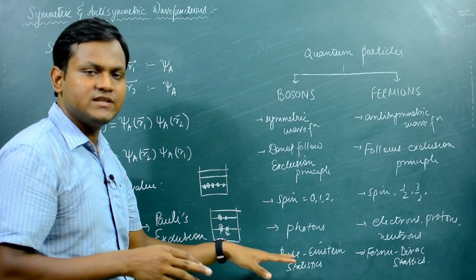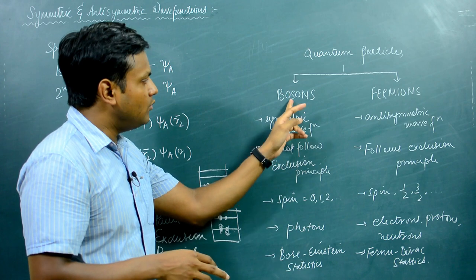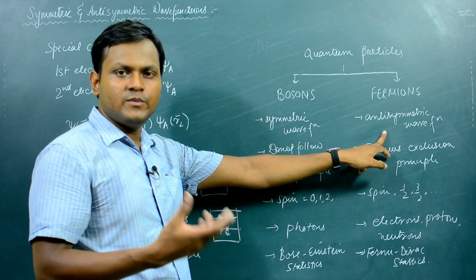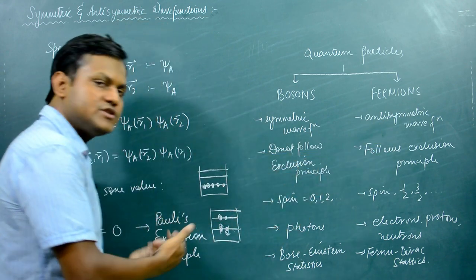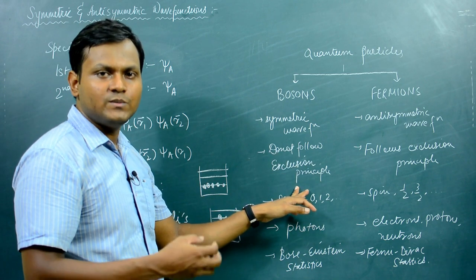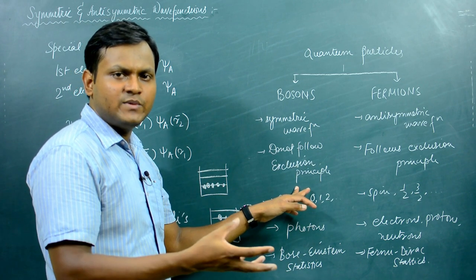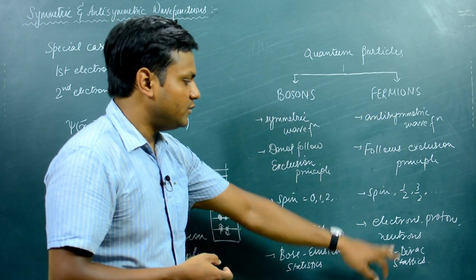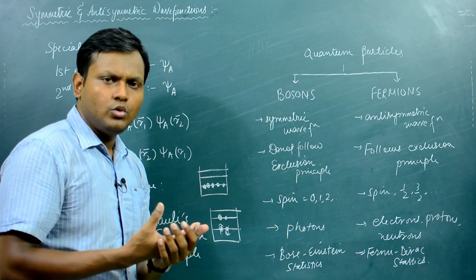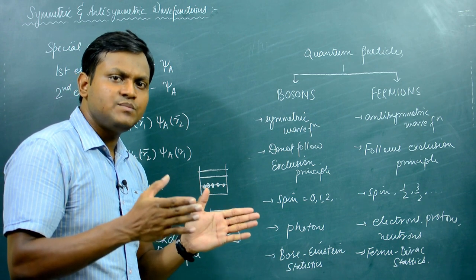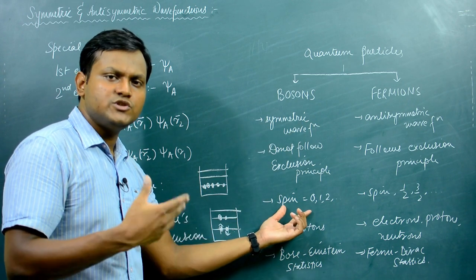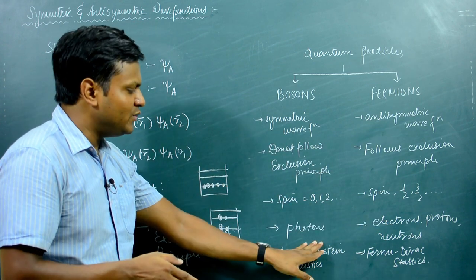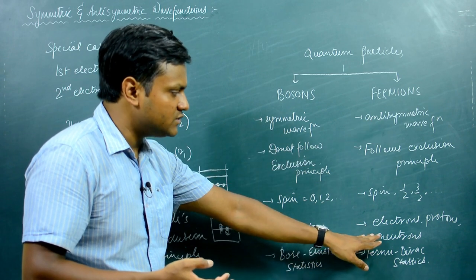To summarize: bosons have symmetric wave functions under particle exchange, do not follow the exclusion principle, can occupy an energy level with as many particles as possible, and follow Bose-Einstein statistics. Fermions have antisymmetric wave functions, do follow the Pauli exclusion principle, and follow Fermi-Dirac statistics. Bosons have zero or integral spins — examples include photons — while fermions have half-integral spins, with examples including electrons, protons, and neutrons.